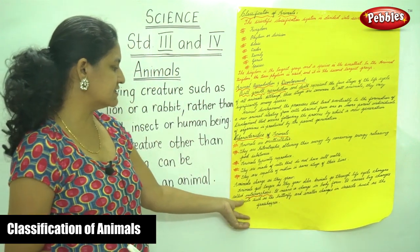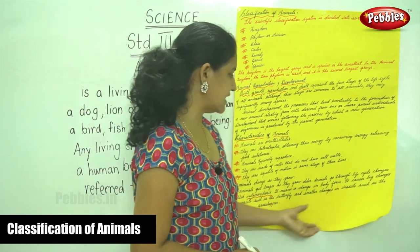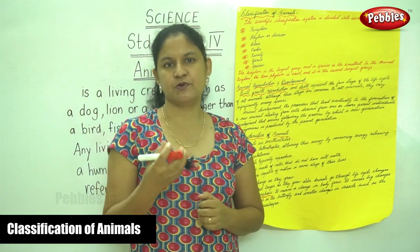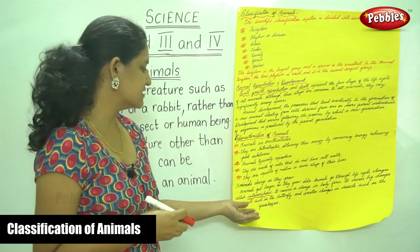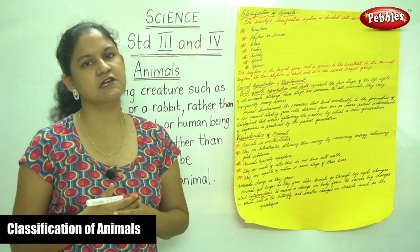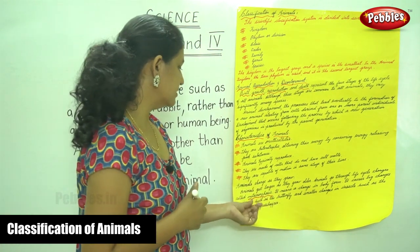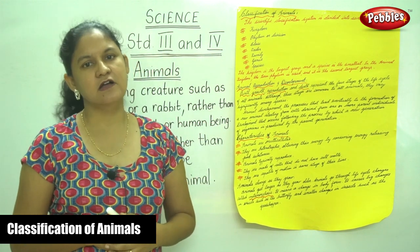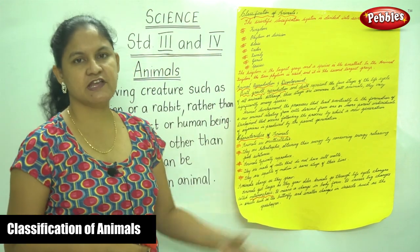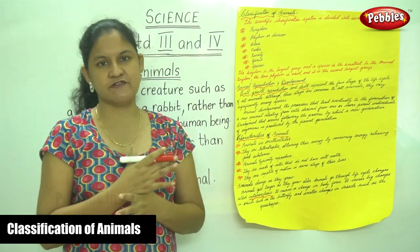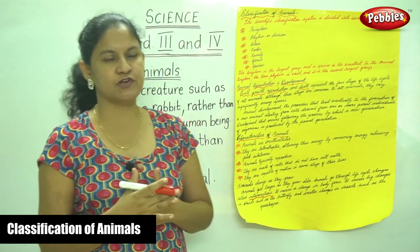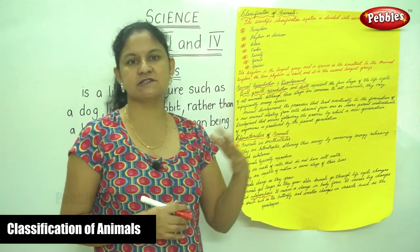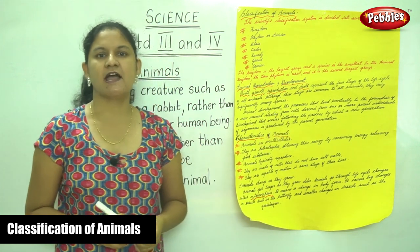Metamorphosis causes big changes in insects such as the butterfly and smaller changes in insects such as the grasshopper. When you compare a butterfly and a grasshopper, the changes in a grasshopper are quite small, whereas in a butterfly the changes are bigger. The scientific classification of animals is divided into seven groups: kingdom, phylum or division, class, order, family, genus, and species.